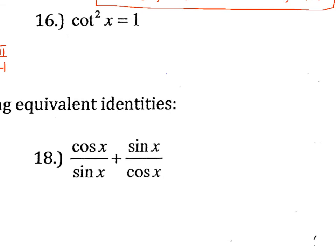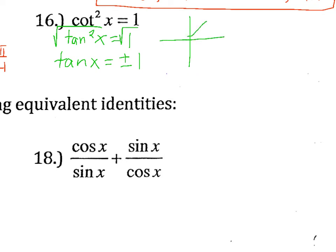For number 16, I'm going to change it to tan squared x, and since the reciprocal of 1 is still 1, I take the square root of both sides. Whenever you take a square root while solving, you need plus or minus, so tan x equals plus or minus 1. Instead of just two solutions, I'll get four solutions because it can equal plus or minus 1 in all four quadrants. Tangent is 1 when the opposite and adjacent sides are both 1, so we're dealing with 45 degree angles: pi over 4, 3 pi over 4, 5 pi over 4, and 7 pi over 4.